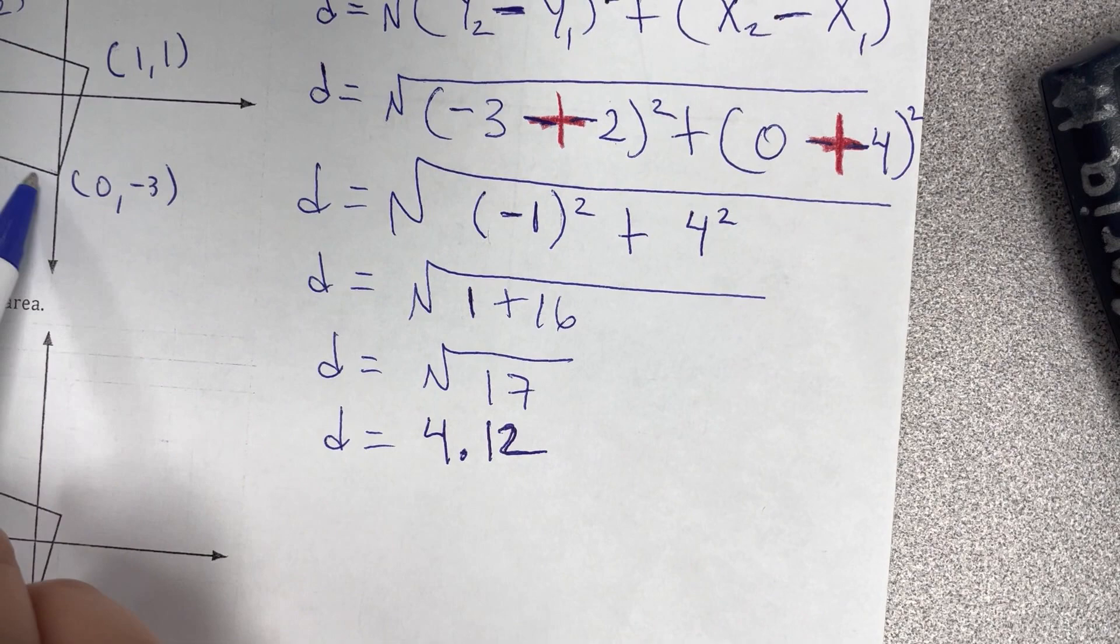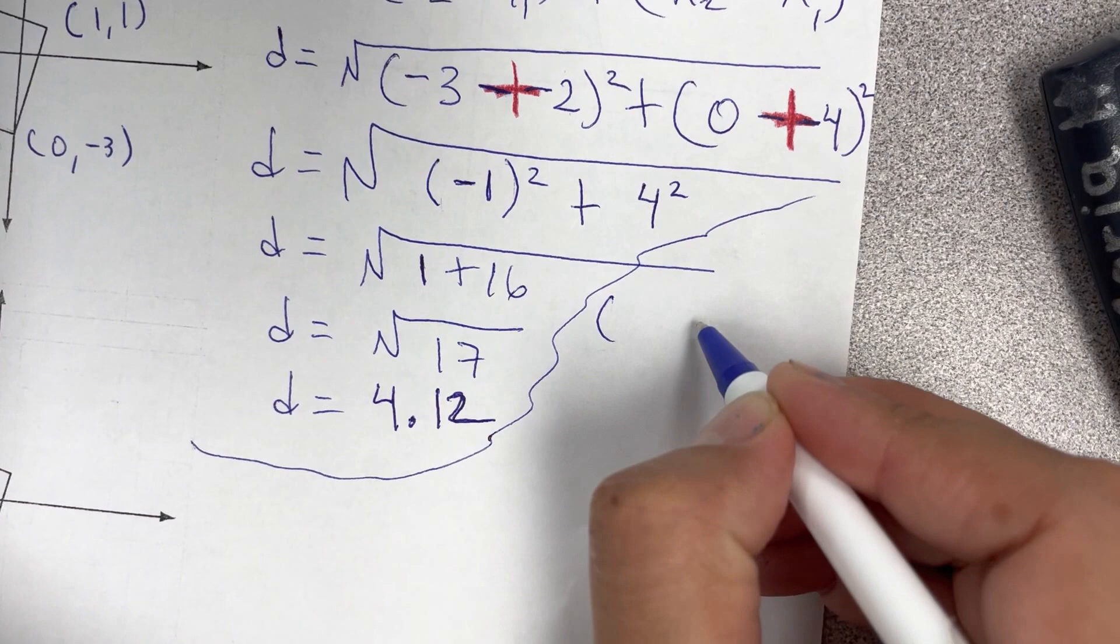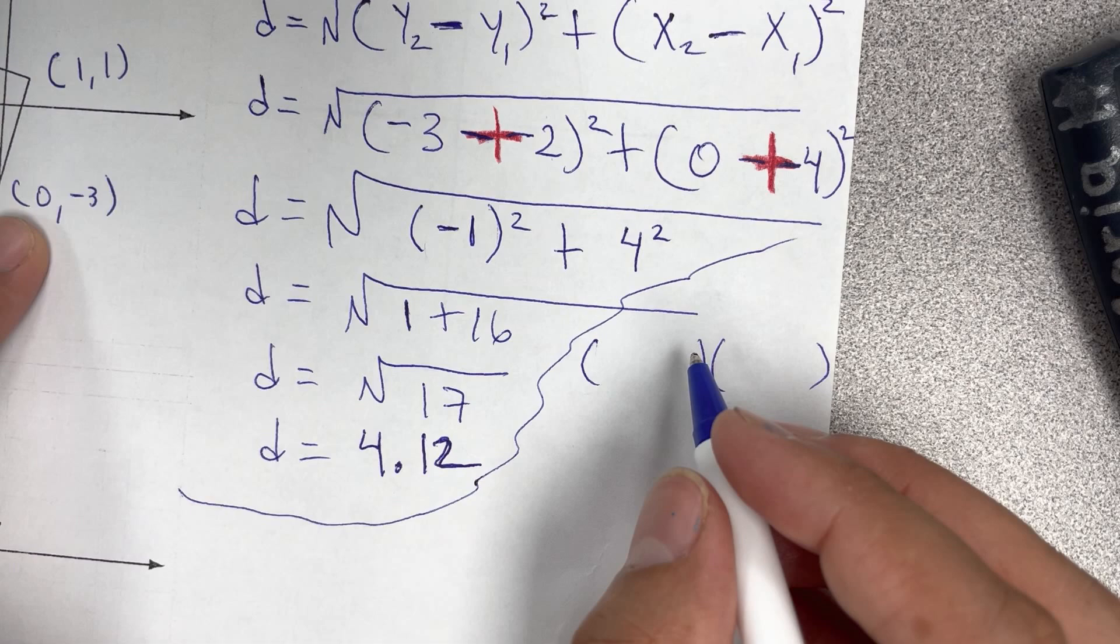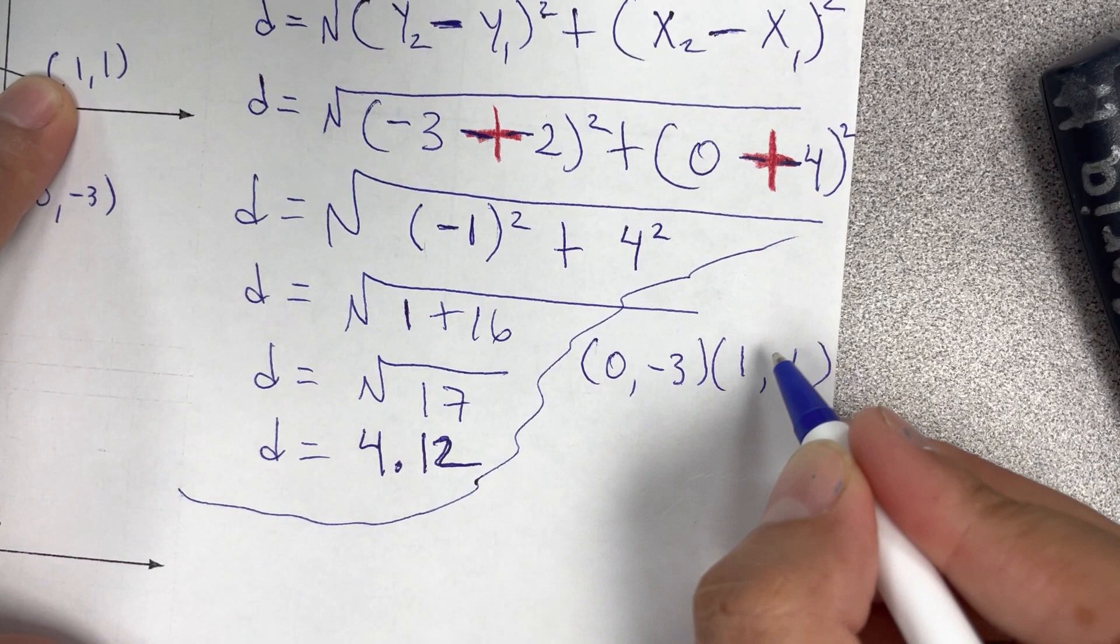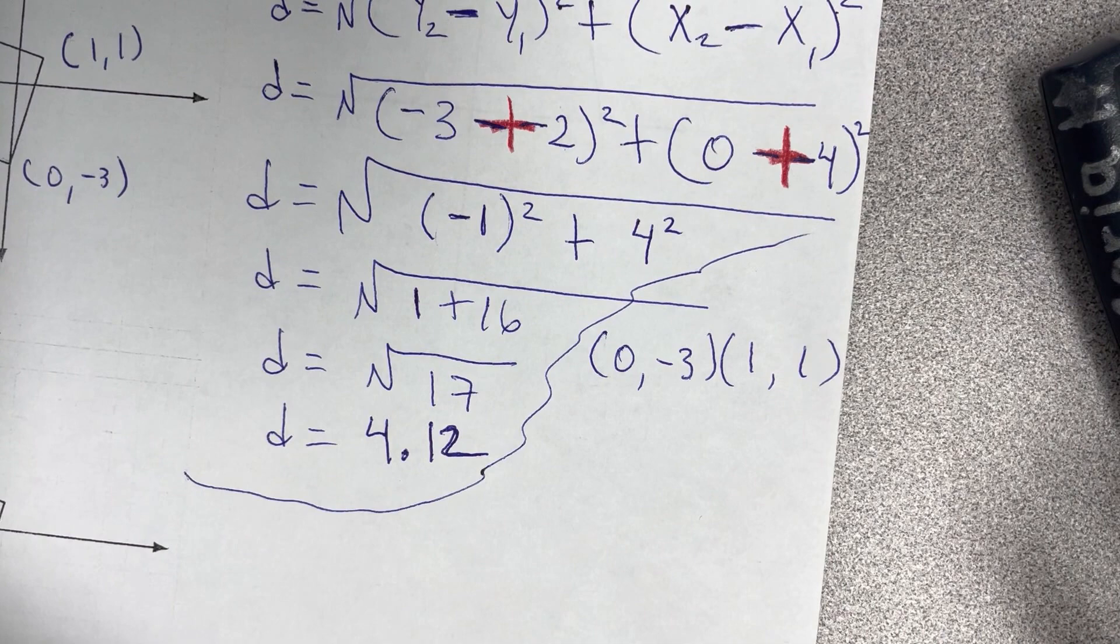Voy a usar los dos puntos que serían estos dos. So, zero, negative three, and one, one. Y el orden no importa, porque al final, just because it's a negative or a positive, es lo único que va a cambiar para algunos, pero ya elevado a la segunda potencia, se hace positive in both ways anyways.